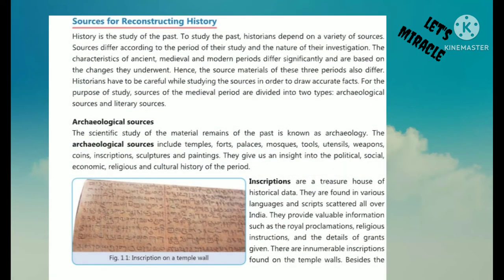Sources for Reconstructing History: There are important sources through which we collect information about history. History is the study of the past. To study the past, historians depend on a variety of sources. Sources differ according to the period of study and the nature of the investigation. The characteristics of ancient, medieval and modern periods differ significantly based on the changes they underwent. Hence, the source materials of these three periods also differ. Historians have to be careful while studying the sources in order to draw accurate facts. Sources of the medieval period are divided into two types: archaeological sources and literary sources.